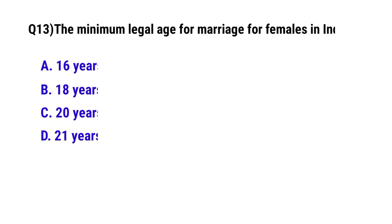Question No. 13. The minimum legal age for marriage for females in India is? The correct option is B: 18 years.